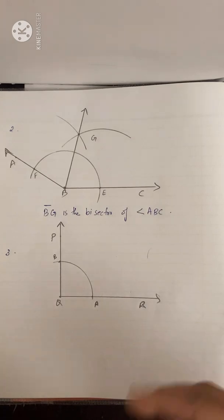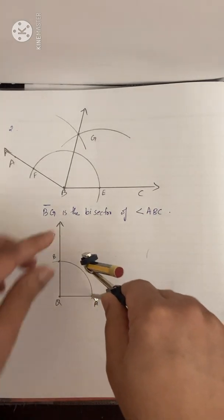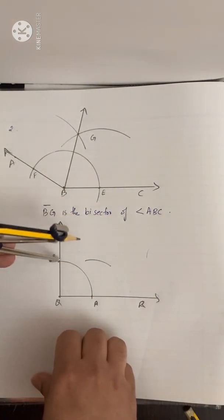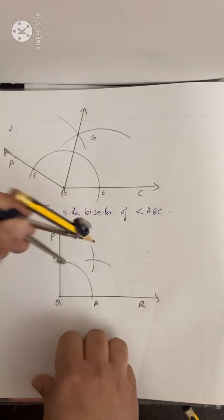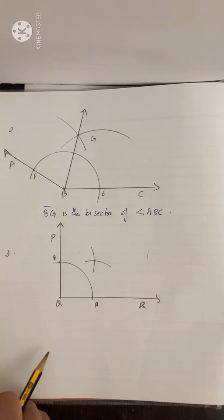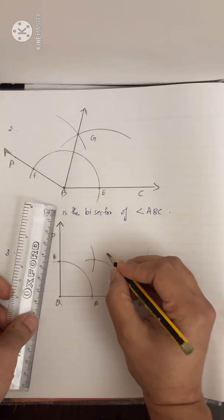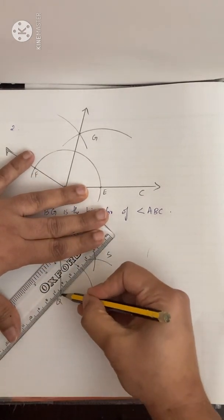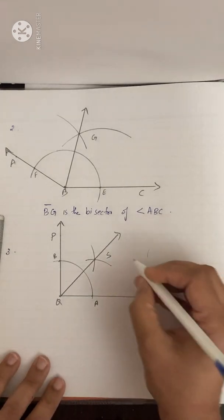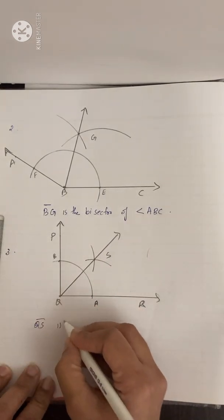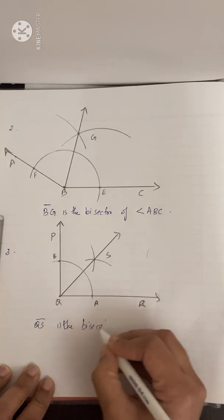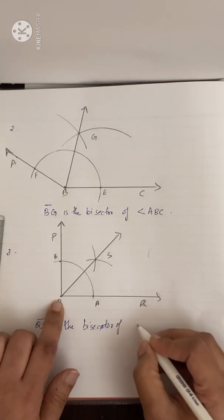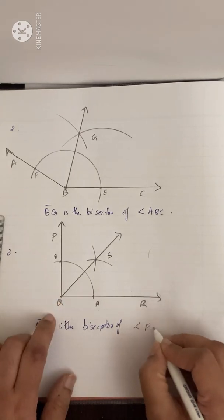With A as center, take a radius more than half of the arc and draw an arc. With B as center, without changing the radius, draw another arc. Let the intersection be S. Now join Q and S. Therefore, QS is the bisector of angle PQR.